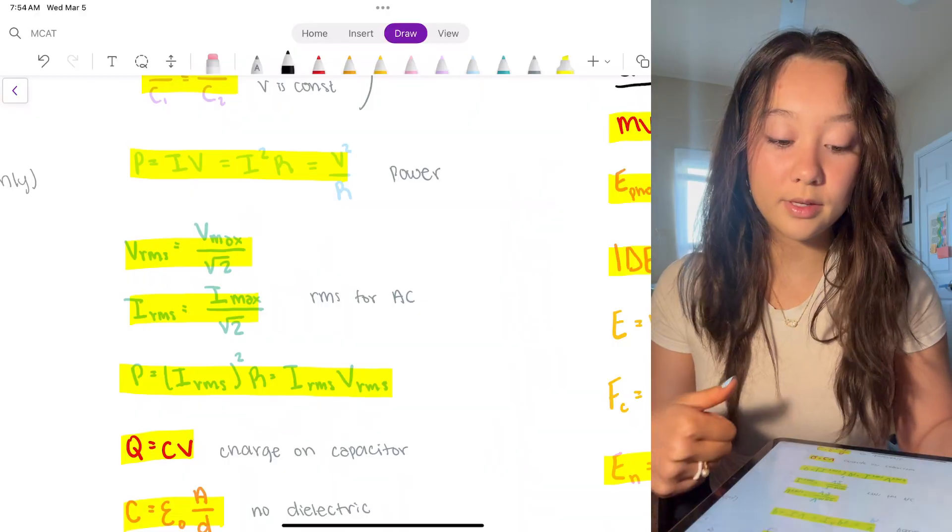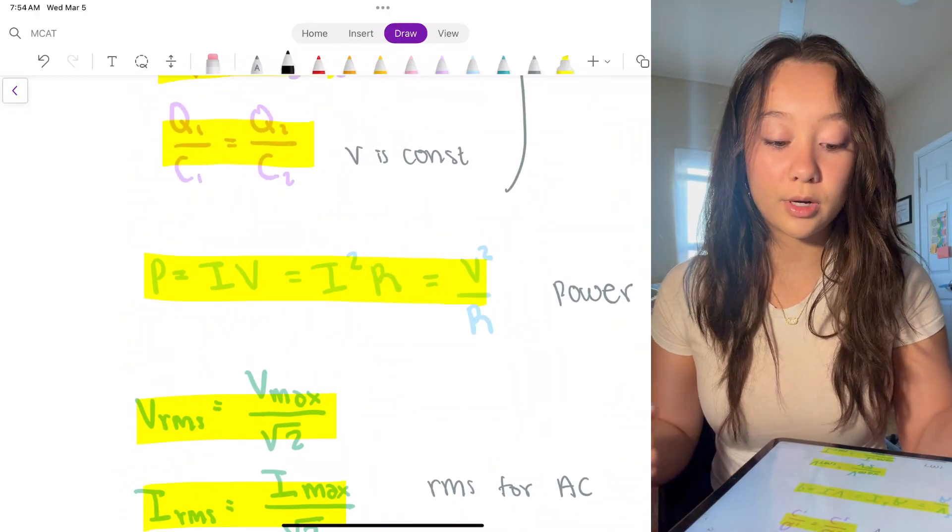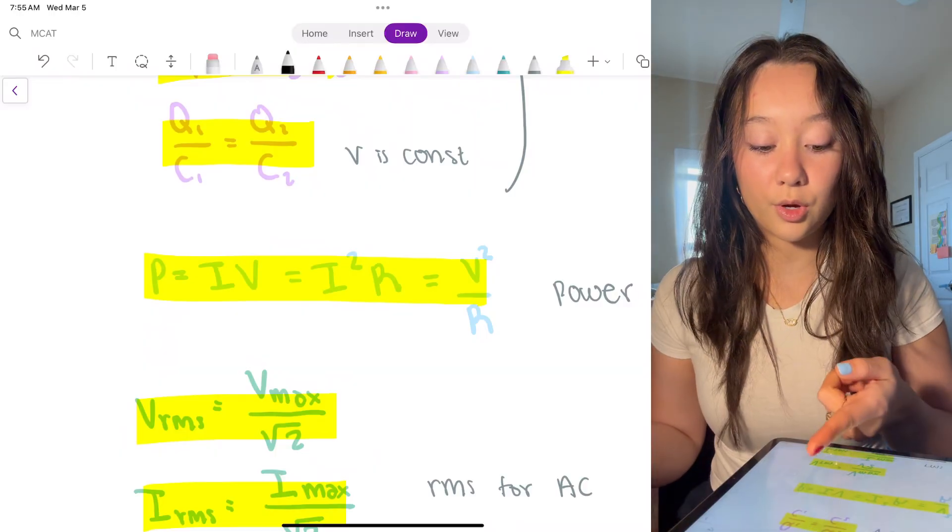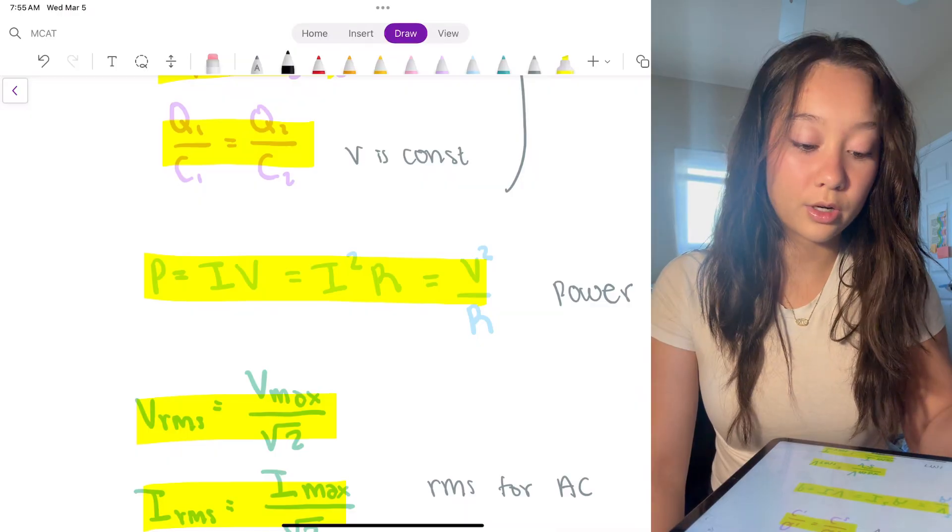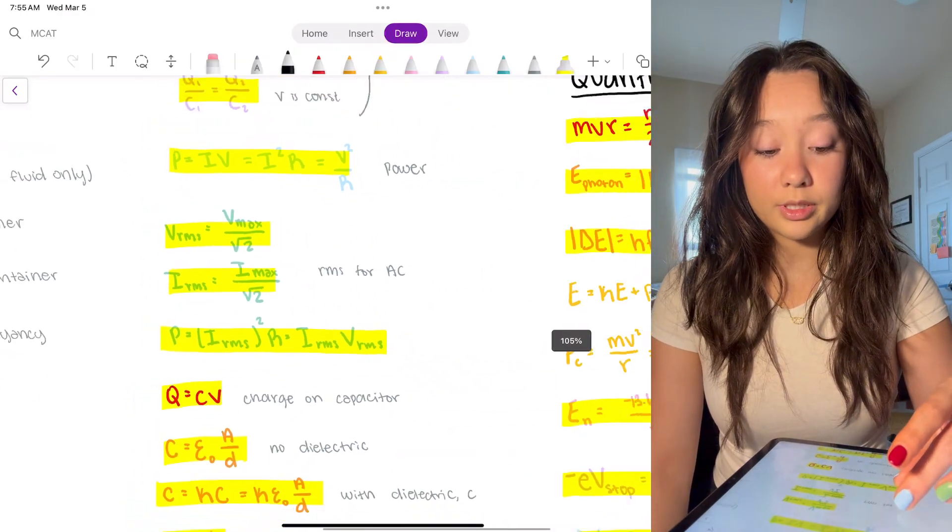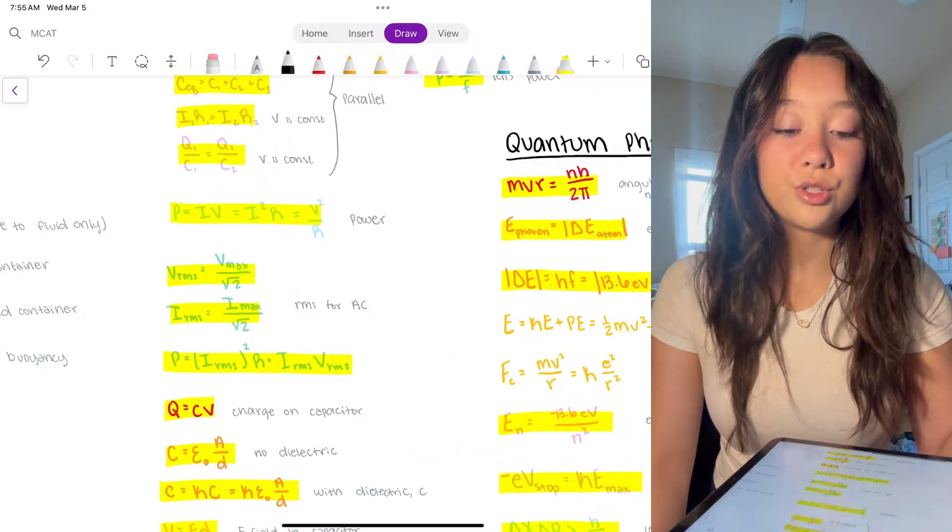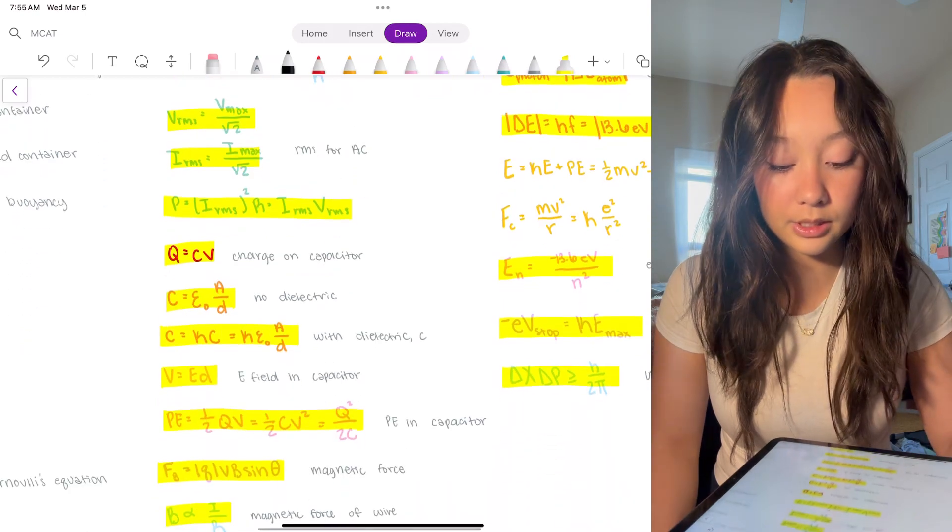Power equals IV. You can just remember this first part, and then if you remember how to derive the other part, this comes from Ohm's Law, so I switched out V with V equals IR, and that's how you get V squared, or that's how you get I squared over R. This is all the root mean squared stuff. Again, this stuff is not super, super high yield, so don't stress over memorizing all the nitty-gritty little details of this.